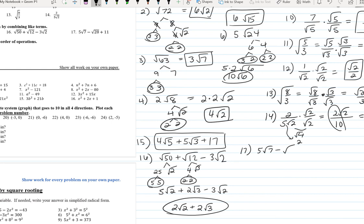5 root 7 minus square root 28 plus 11. So we're going to have to break these down. Let's break down the 28 into 7 times 4. So that becomes 2 root 7. And then that we can't simplify. So now we can combine these together. 5 minus 2. And there's our final answer.